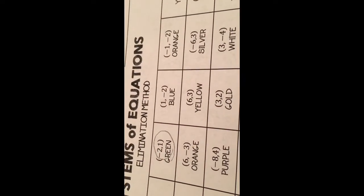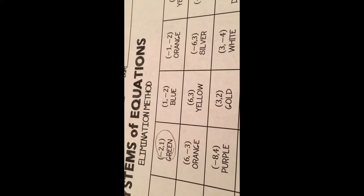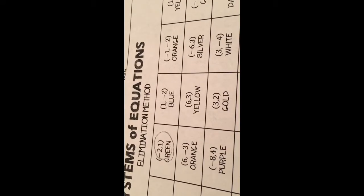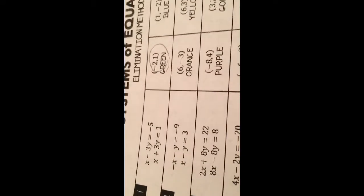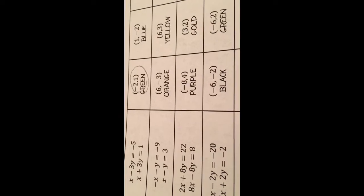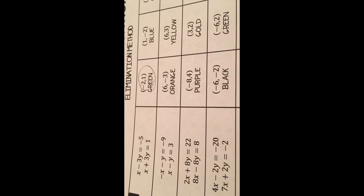When we come back to the paper, we go at green at negative 2, 1 — and everywhere on the frog that is that color, problem number one is colored green. Number two: we have negative x minus y equals negative 9, and x minus y equals 3.